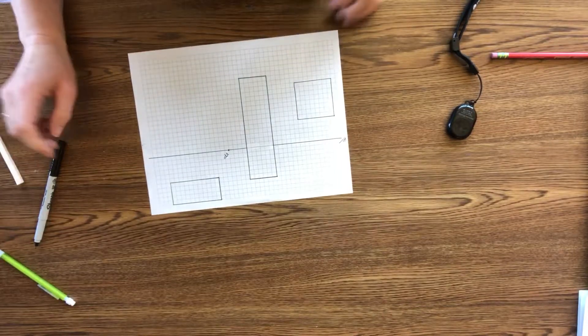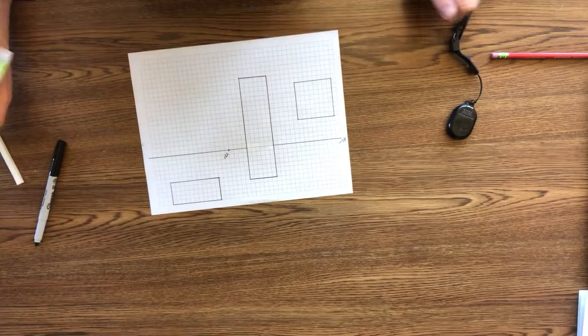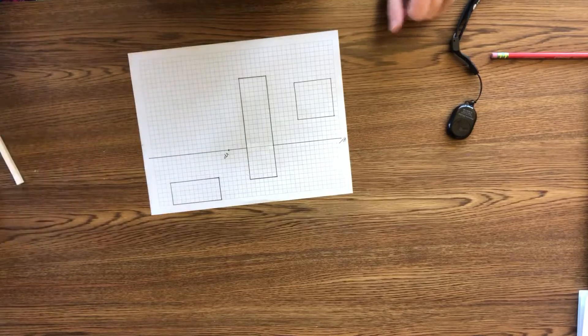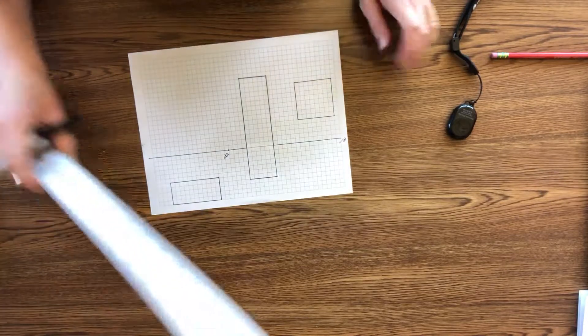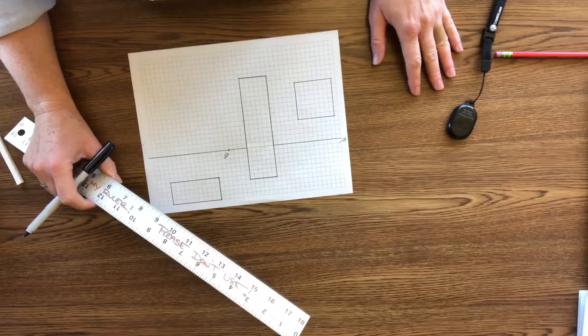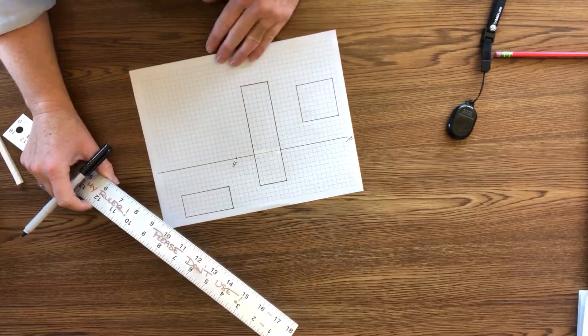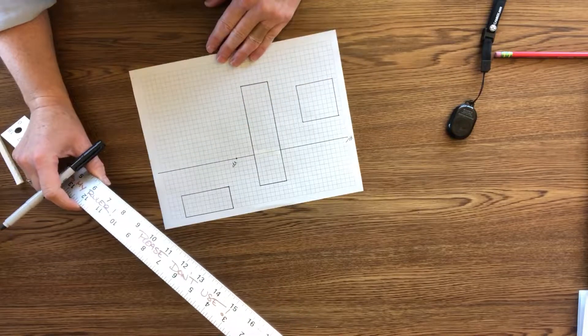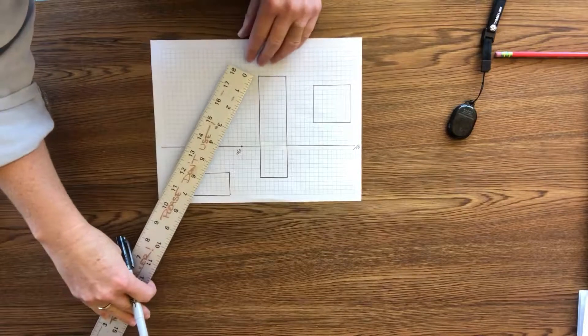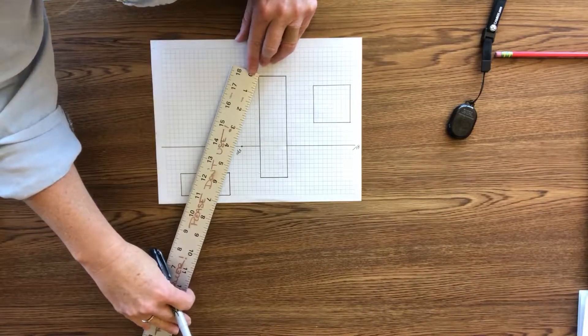Alright, from this point we're going to draw orthogonal lines. Orthogonal lines are the lines that are going to go to the vanishing point. I'm going to start with, we're going to call this a building.